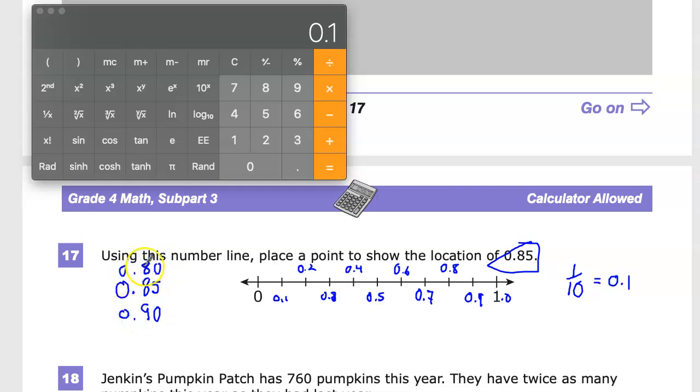So 0.85, because 5 is exactly in the middle of 1 and 10, would be in the exact middle between 0.80 and 0.9. So I'm going to go up here to 0.8 and 0.9, and I'm going to make my little point right there. And that's my answer.